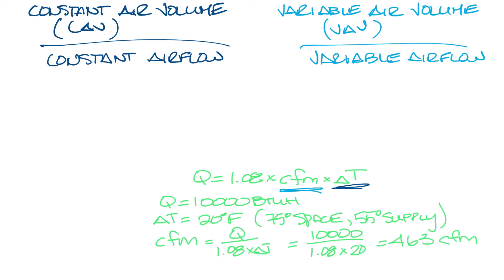So this holds true for our constant volume and variable air volume system, but what happens if we increase the load to 12,000 BTU? So now on our variable air volume system, we need to go calculate CFM again. So CFM equals 12,000 divided by 1.08 times 20, and that equals 556 CFM. So we need 556 CFM in this system to handle the 12,000 BTU load.